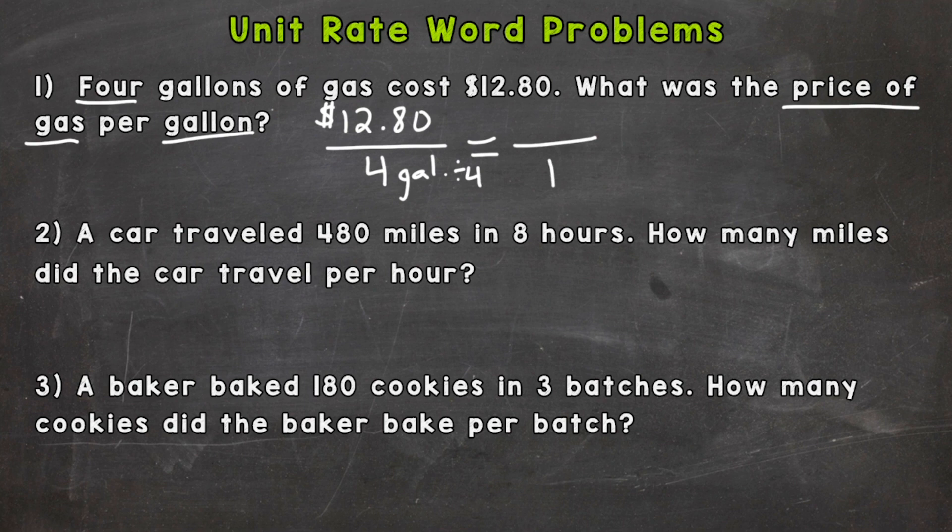Now when it comes to fractions remember whatever you do to the bottom you need to do to the top. That keeps it equivalent. So we would do $12.80 divided by four. And that gives us $3.20. So $3.20 per gallon.